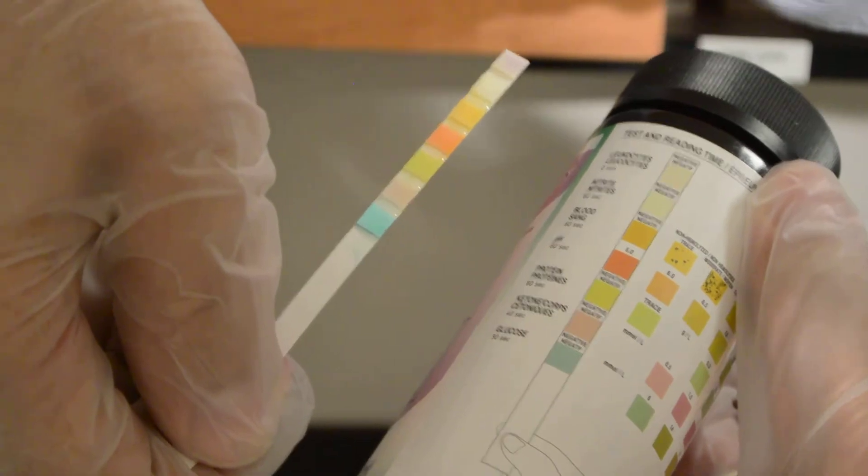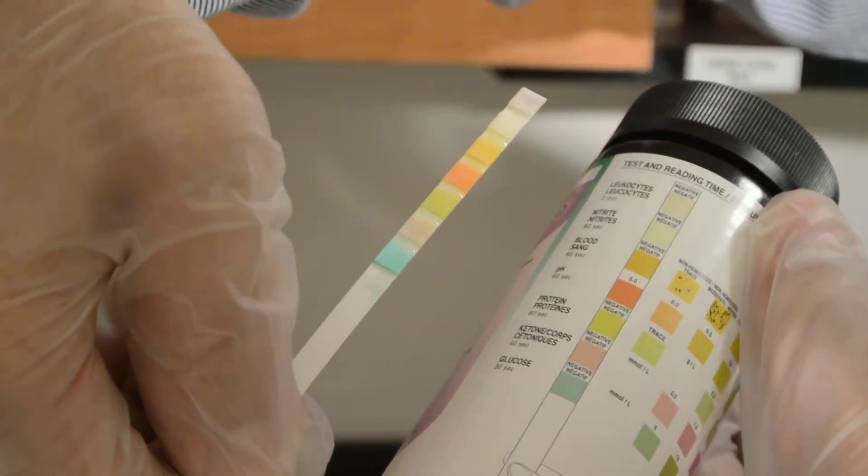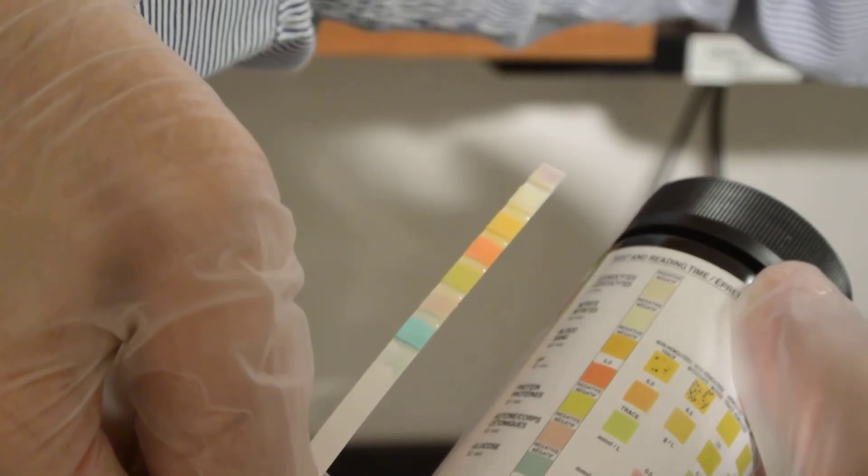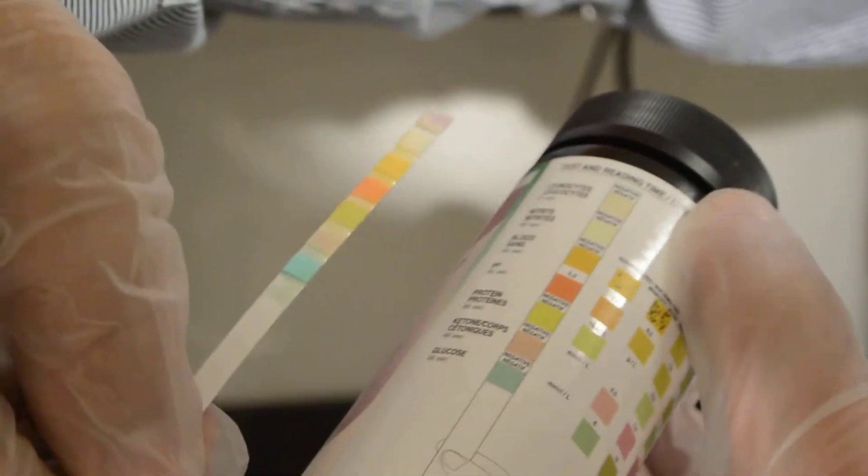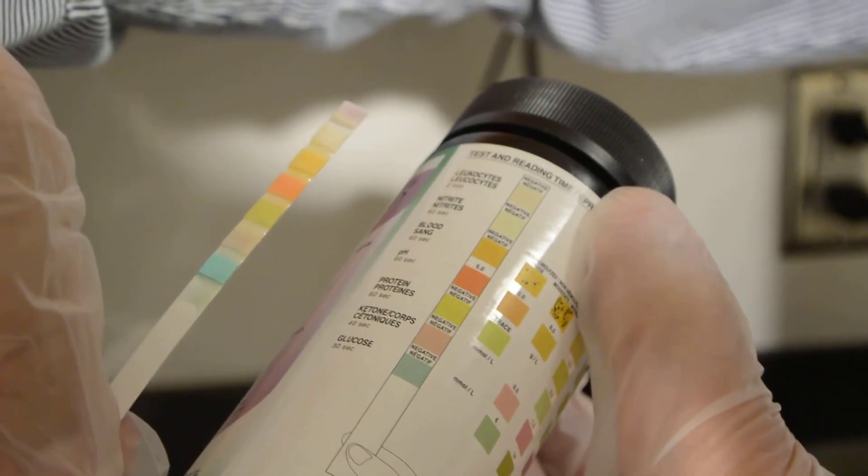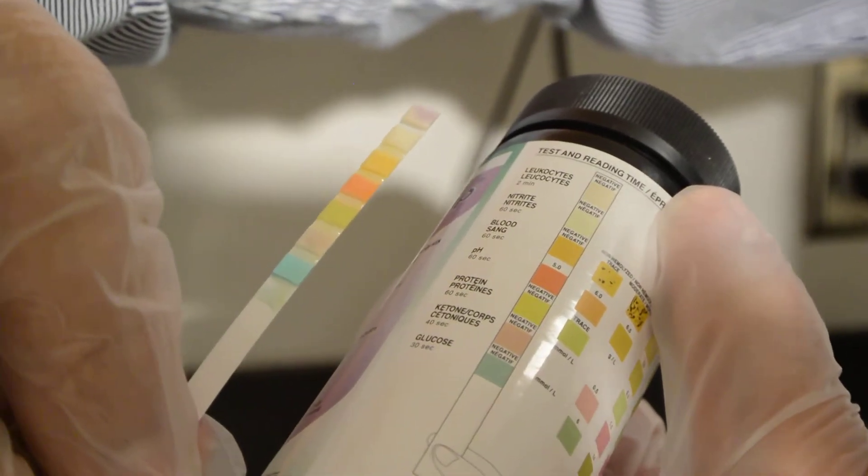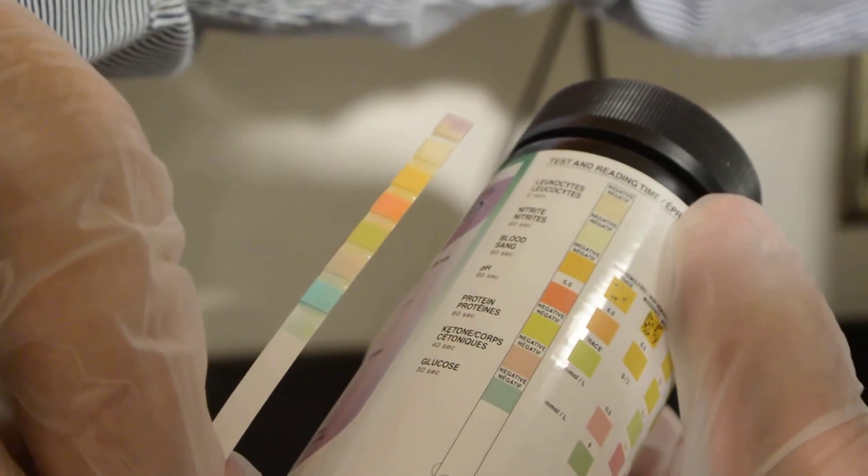What you do is compare the color of what's on the stick with the color on the container. Realize that some might take 60 seconds and some might be quicker to give you the result.